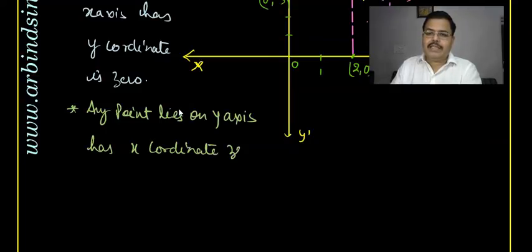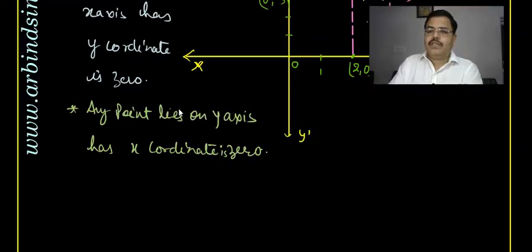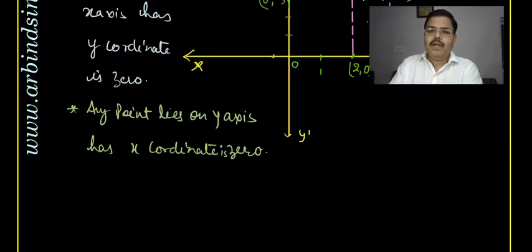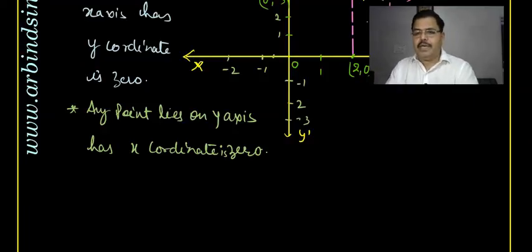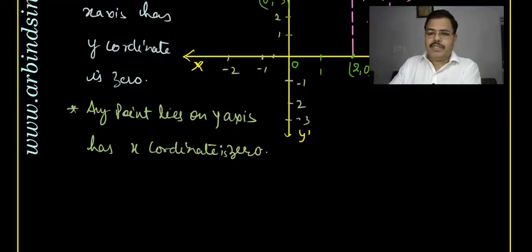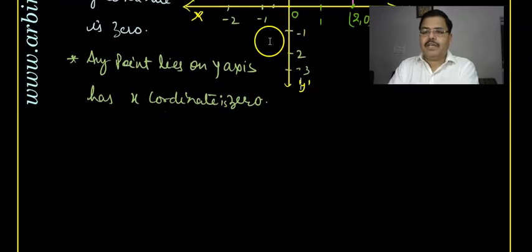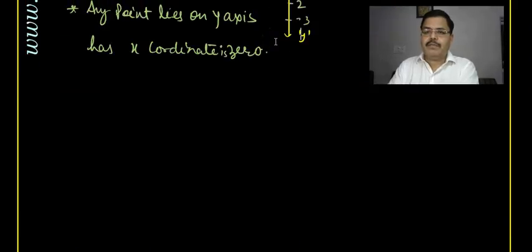On the y-axis, x-coordinate is 0; on the x-axis, y-coordinate is 0. If the distance along x-axis is 2 and along y-axis is 3, then the coordinate is (2, 3). If a point is on the left side, there will be negative coordinates — for example, minus 1, minus 2 along x-axis, and minus 1, minus 2, minus 3 along y-axis. Y is negative below the origin and positive above; x is positive to the right of origin and negative to the left.